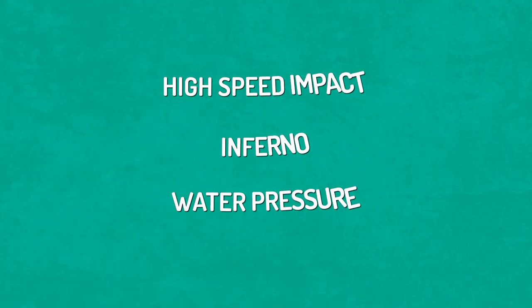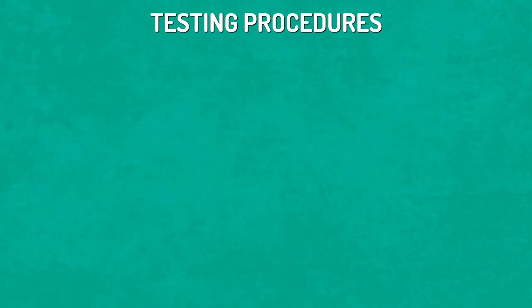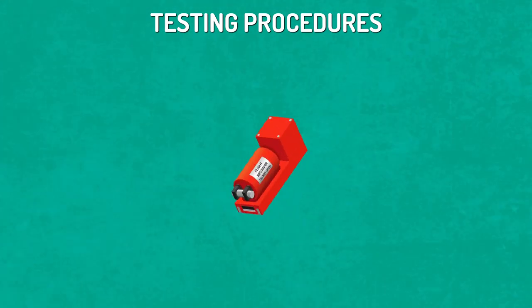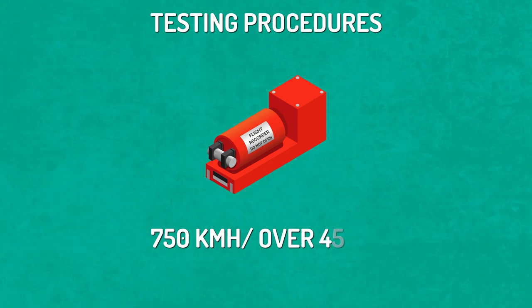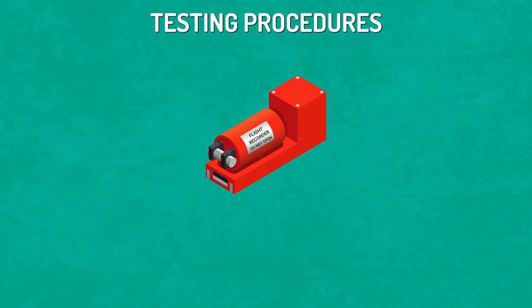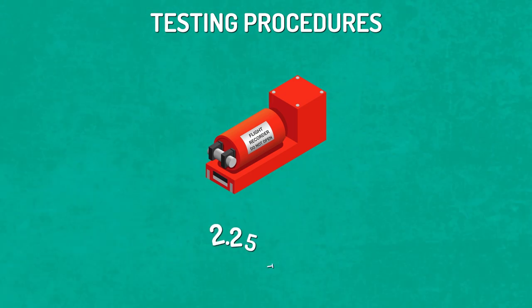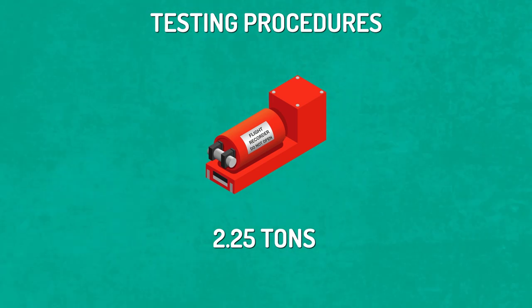To ensure this is the case, black boxes go through extreme and rigorous testing procedures. For one portion, the boxes are launched at a concrete wall at 750 kilometers — or over 450 miles per hour. They're also tested to withstand loads of up to 2.25 tons, or nearly 5,000 pounds, for a span of at least five minutes.